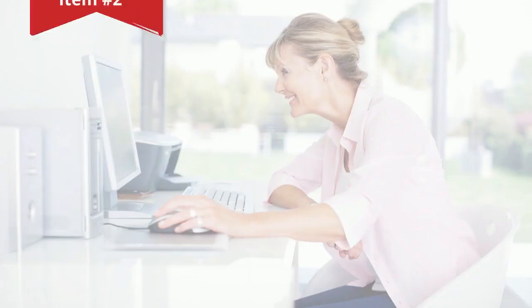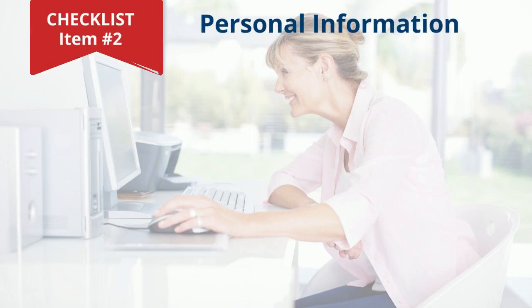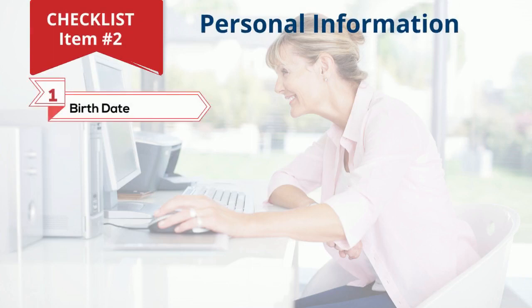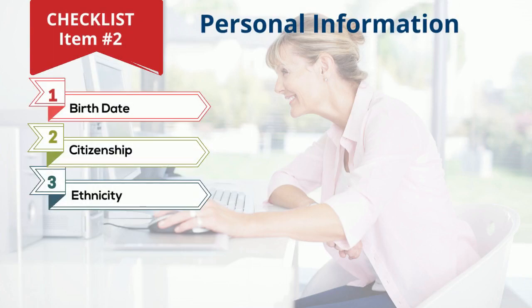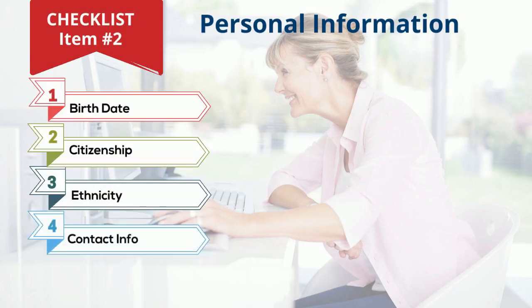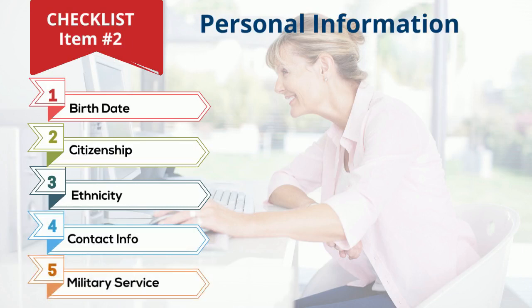For checklist item number two, you'll be asked to complete several fields of personal information, including birth date, citizenship, ethnicity, contact information, and military service. You'll also be asked to provide information for financial aid processing.